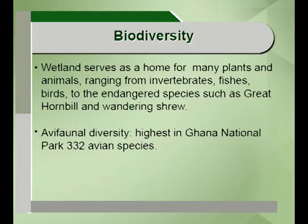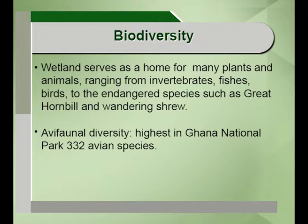Coming on to biodiversity, India has more than 115 wetland reserves and more than 25 Ramsar sites designated as wetlands of international importance. The wetlands serve as a home for many plants and animals ranging from invertebrates, fishes and birds to endangered species like the wandering shrew and the great hornbill. The avifaunal diversity in Indian wetlands is highest in the Ghana National Park, which alone supports 332 avian species.